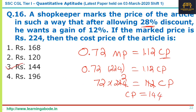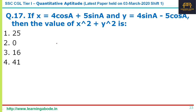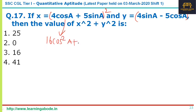The cost price is 144, answer option 3. Question number 17: given x and y, find x² + y². This is like expanding (a + b)² and (a − b)². We know (a + b)² = a² + b² + 2ab and (a − b)² = a² + b² − 2ab. Expanding gives 16 cos²A + 25 sin²A + 40 cos A sin A.